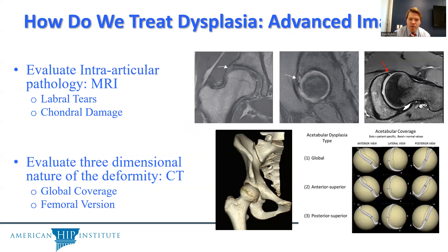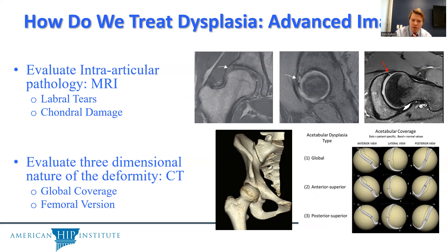Once dysplasia is identified radiographically, advanced imaging is obtained if surgery is being considered. This includes an MRI or MR arthrogram to evaluate intraarticular structures and soft tissue structures such as the abductor tendons or iliopsoas tendon, as well as chondrolabral damage and capsular integrity. CT scans are also obtained to get a three-dimensional understanding of the deformity, evaluate global versus focal undercoverage, and assess femoral version — all critical for preoperative planning.